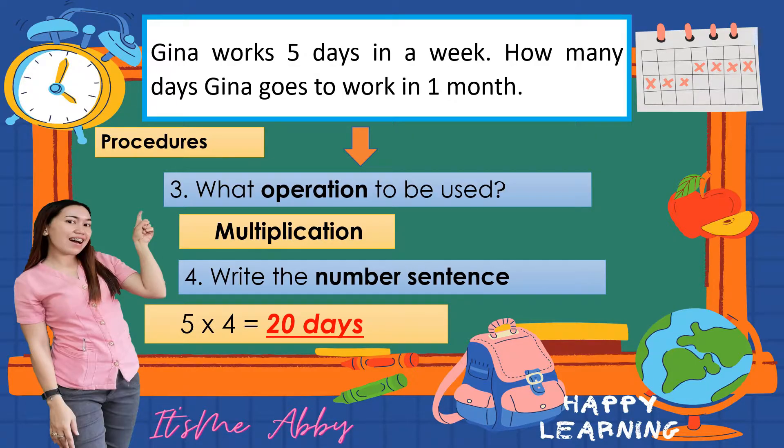5 refers to the number of days Gina works in a week, and 4 refers to the number of weeks in a month. So 5 times 4 equals 20 — Gina works 20 days in one month. Those are the procedures for solving a word problem that involves time measure.